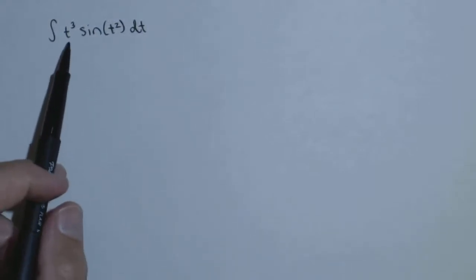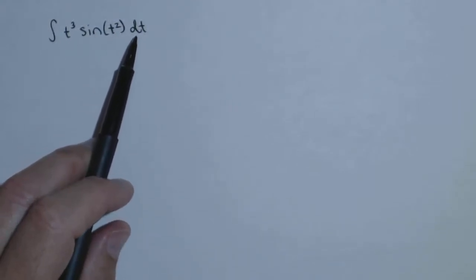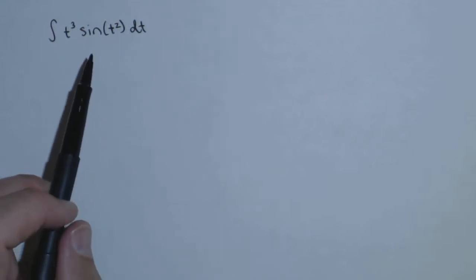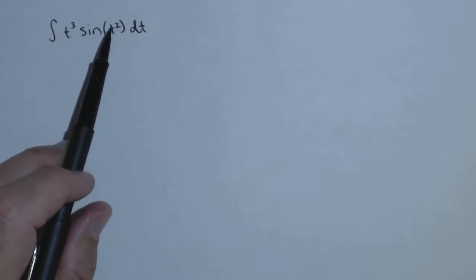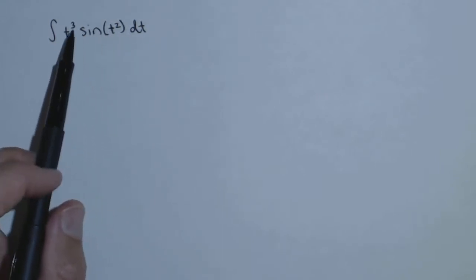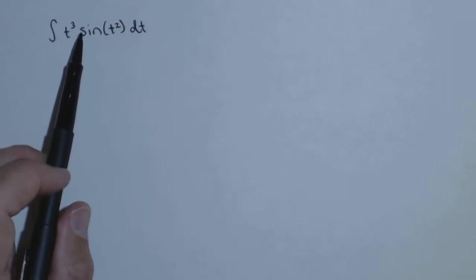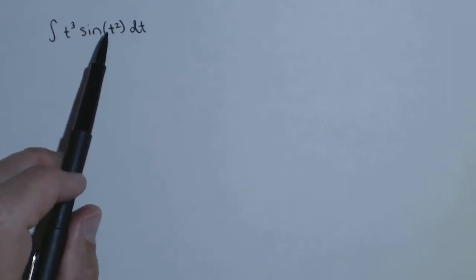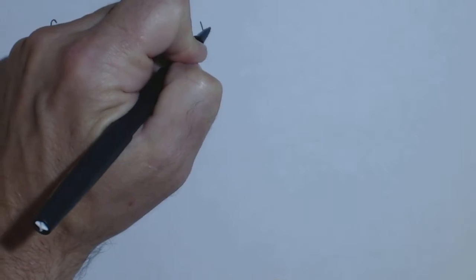We're looking to take the antiderivative of t cubed sine of t squared dt. It's not a basic u substitution, so our next thought would be integration by parts, which will work, but we can actually make this easier to deal with, and there's something going on here that makes that so, and I'll point it out here in a second.